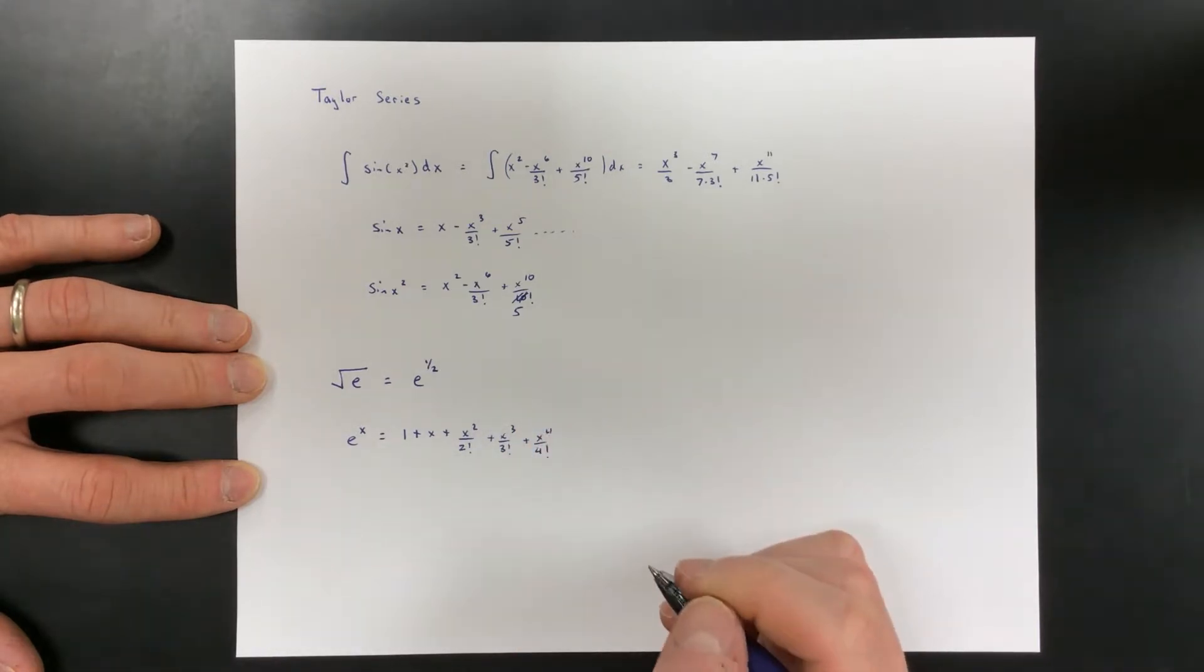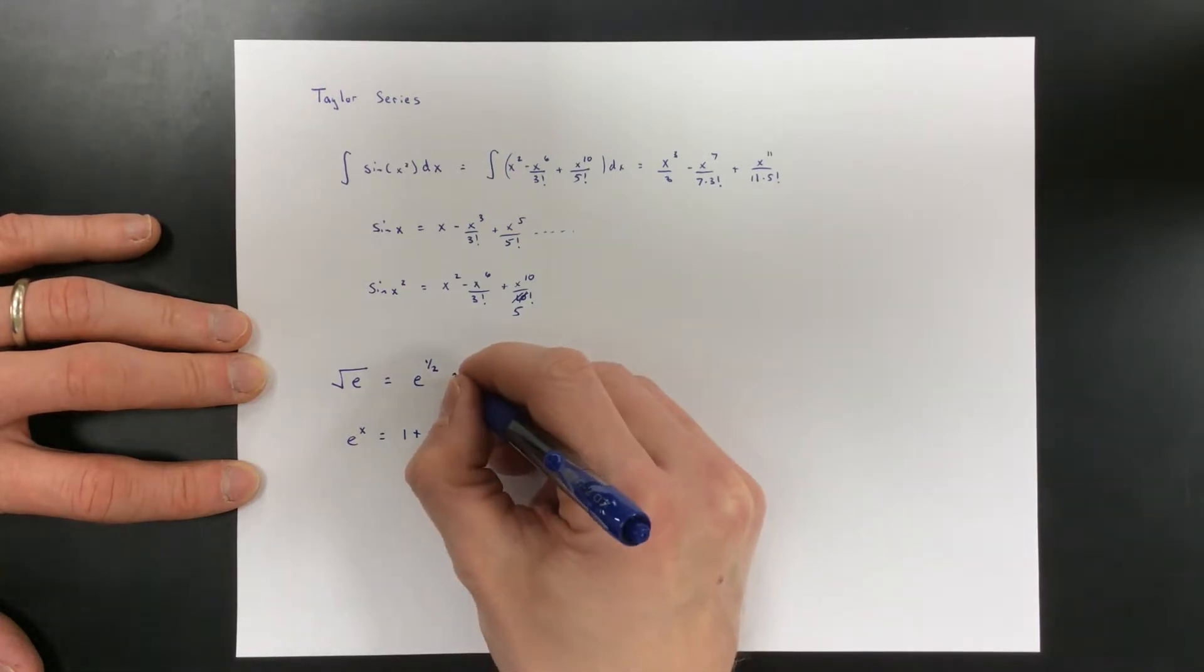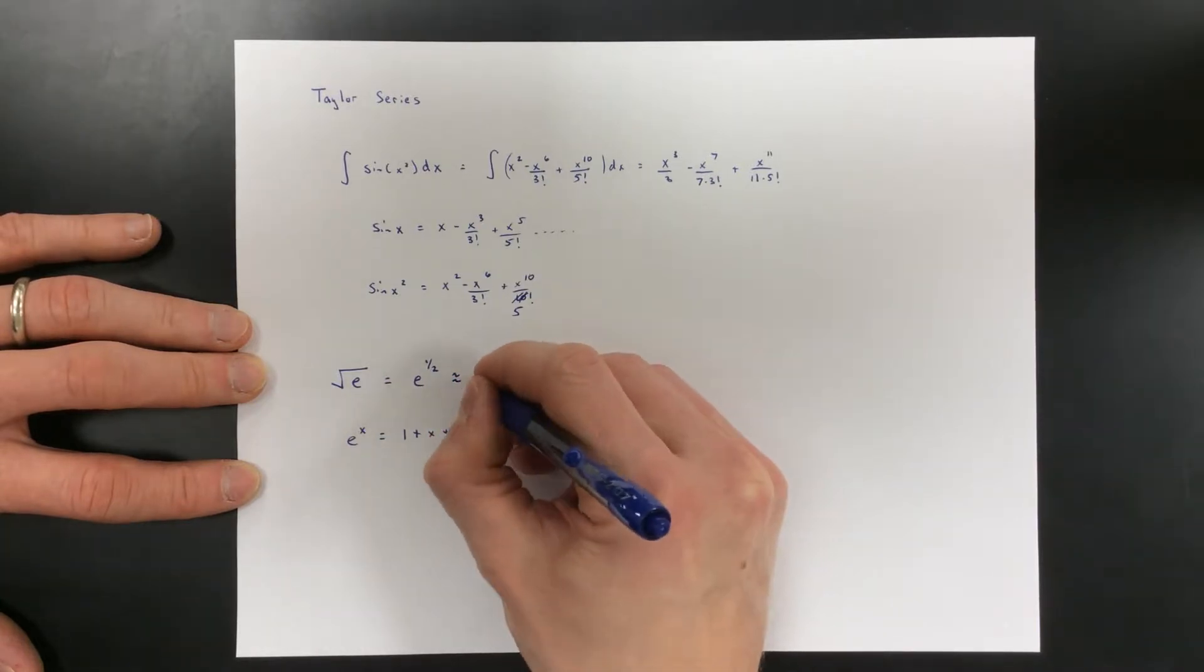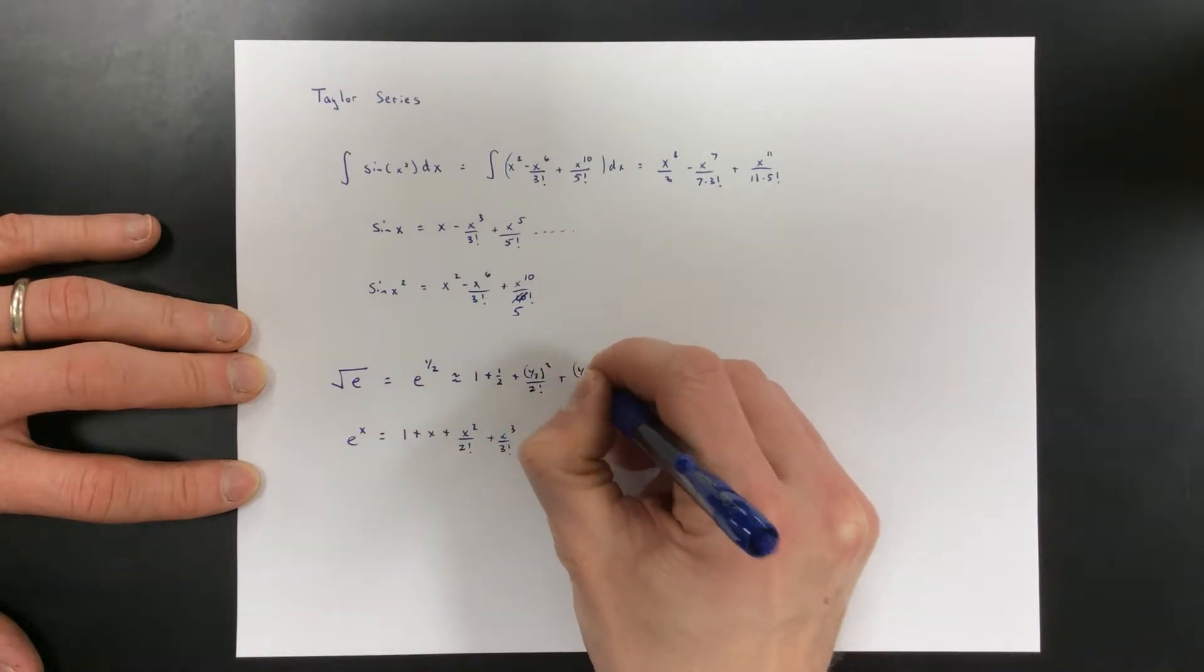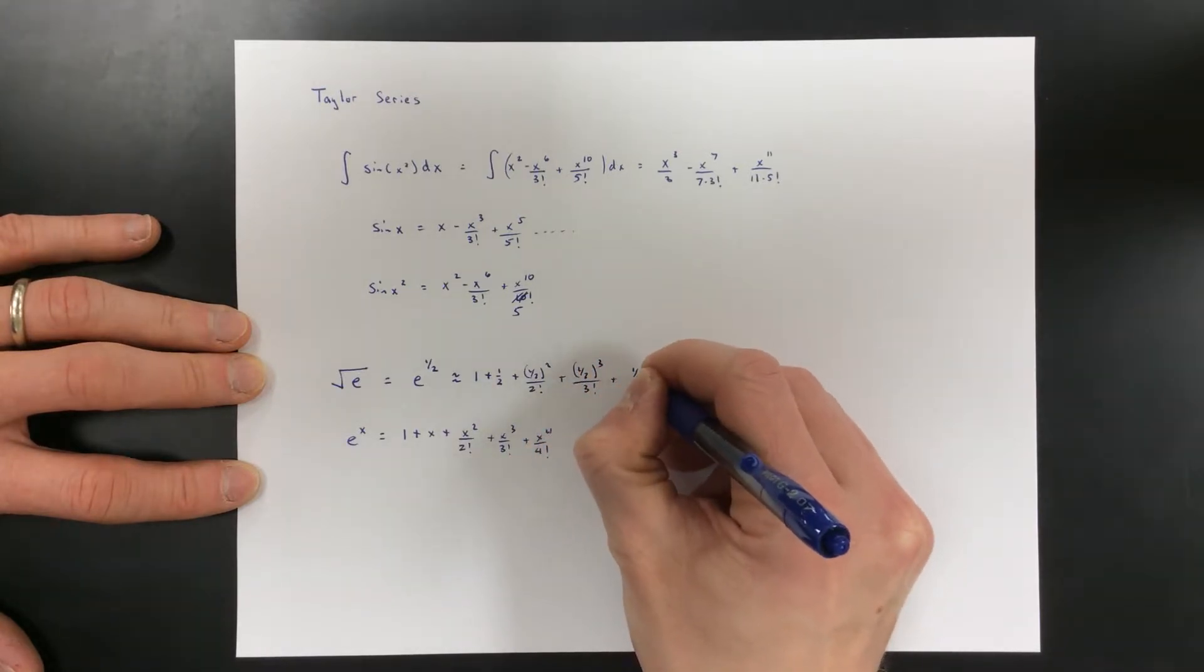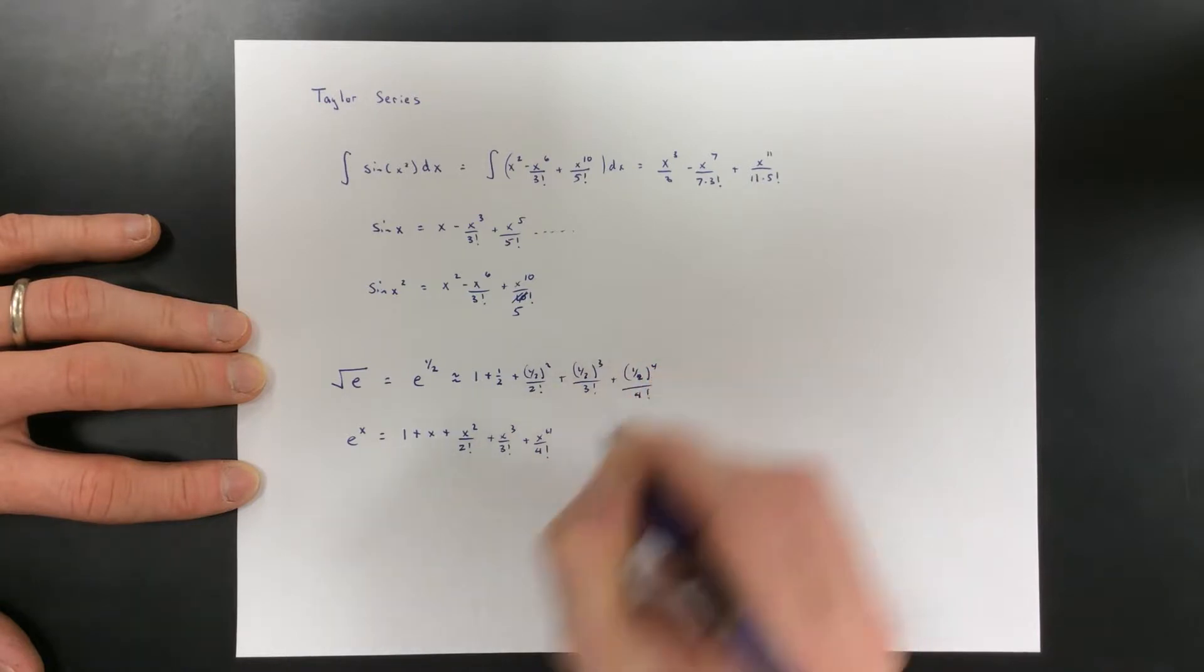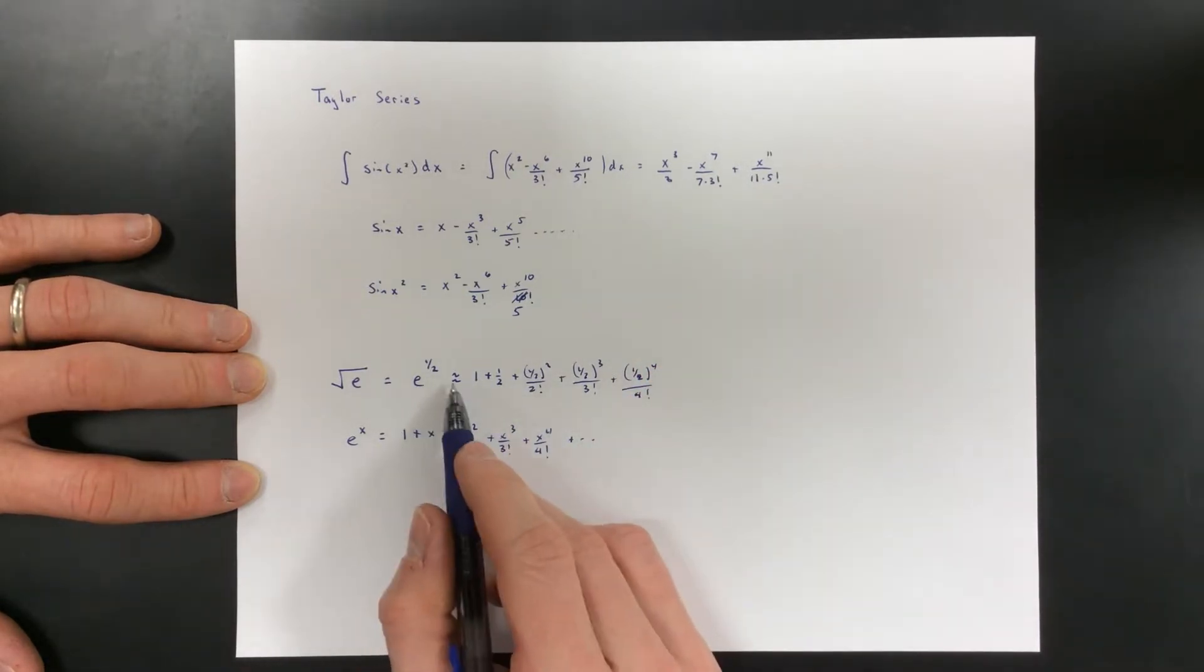And so then e to the half, well that's pretty much then 1 plus a half plus a half squared over 2 factorial plus a half cubed over 3 factorial plus a half to the 4th over 4 factorial. If e to the x is this, then e to the half is just me taking a half and putting it in for the x's.